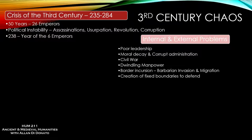Another problem with the fixed boundaries is you're no longer expanding — you're no longer taking in funds into the Roman Empire. So the treasury is going to have to really depend on taxation. It's not an industrialized society; it's not going to be making money off of producing things. So taxation is going to be the big thing, creating an economic situation mixed with this military situation — a recipe for disaster.